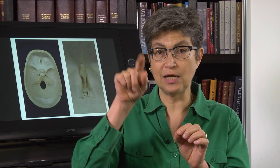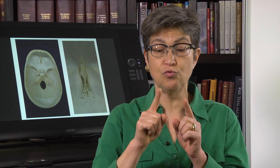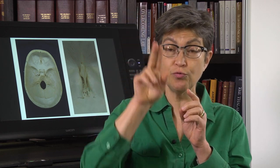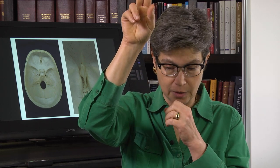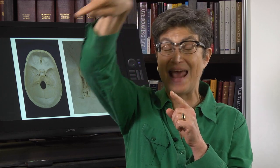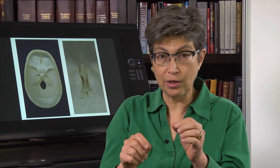Cranial nerve 11 arises from motor neurons in the high cervical cord. Those neurons give rise to a root that, instead of going out through the vertebral column, actually goes into the cranium — through the subarachnoid space, through the foramen magnum, and into the cranium, and then out through a hole in the cranium. So the cells of origin are in the spinal cord, but it is a cranial nerve because the nerve actually exits from the cranium.